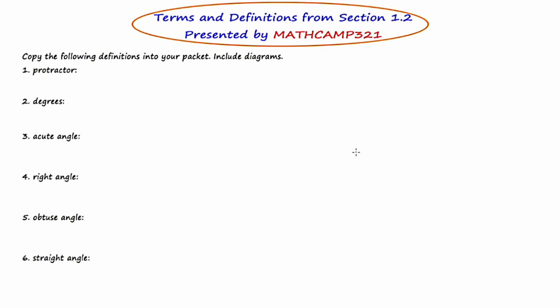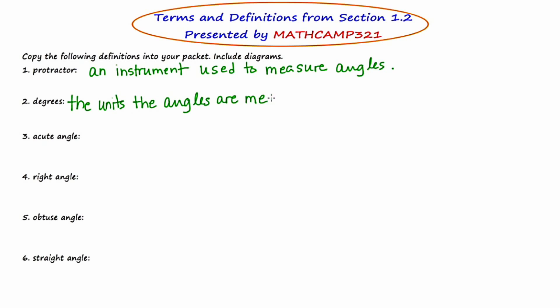We're going to start with a protractor. I'm sure you've all used a protractor before. We have to go through the definition real quick: it is a device or instrument used to measure angles. Our next term is degrees, and degrees are the units that we measure angles in.